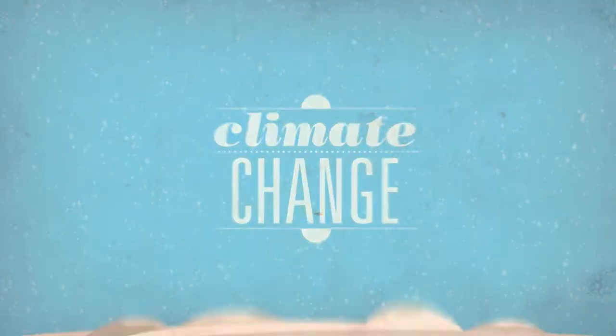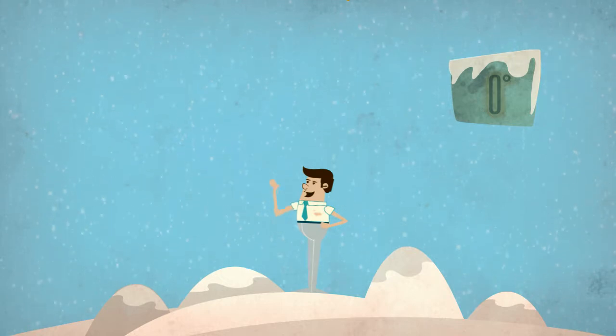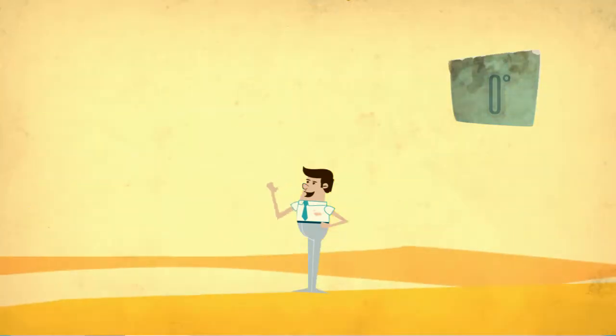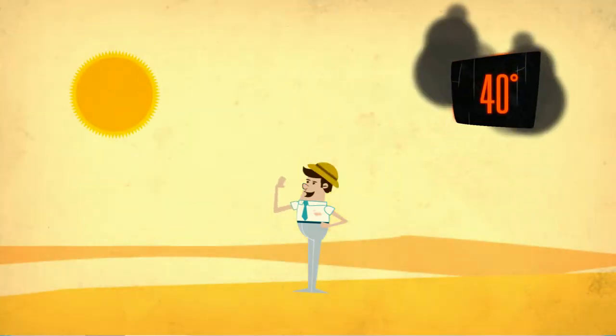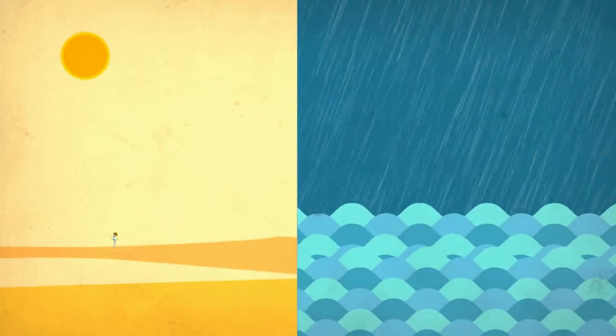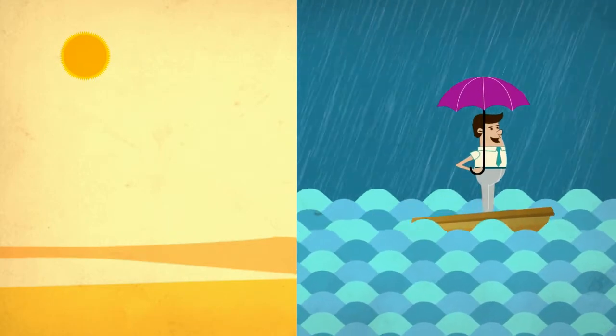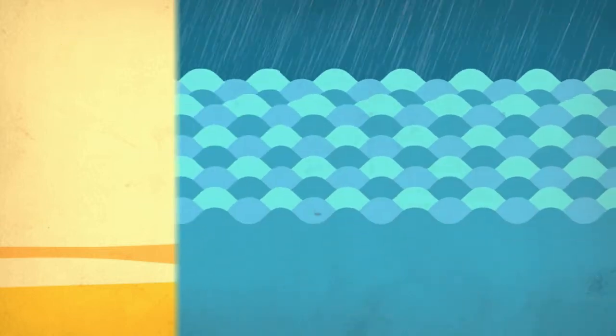Even though you may not have noticed it where you live, average temperatures on land and sea around the world have been increasing more than usual over the last hundred years. And rainfall patterns have changed so that some places have become much drier and others suffered devastating floods.